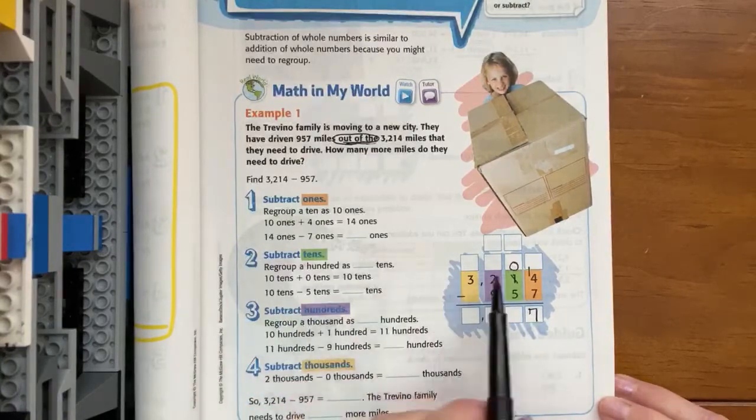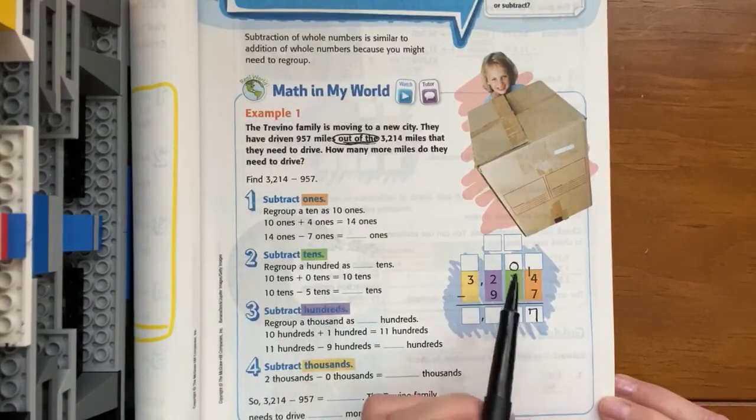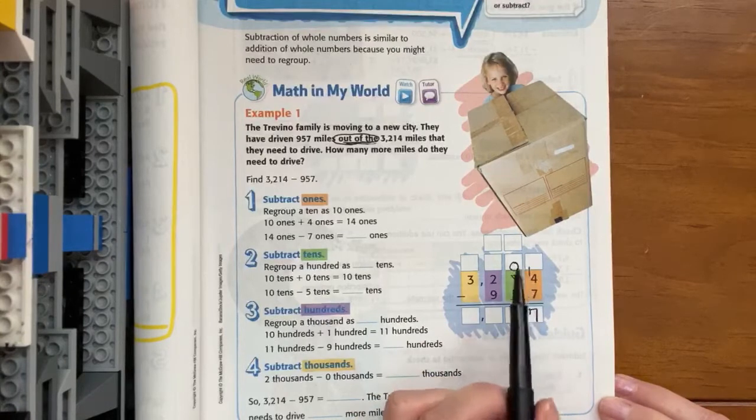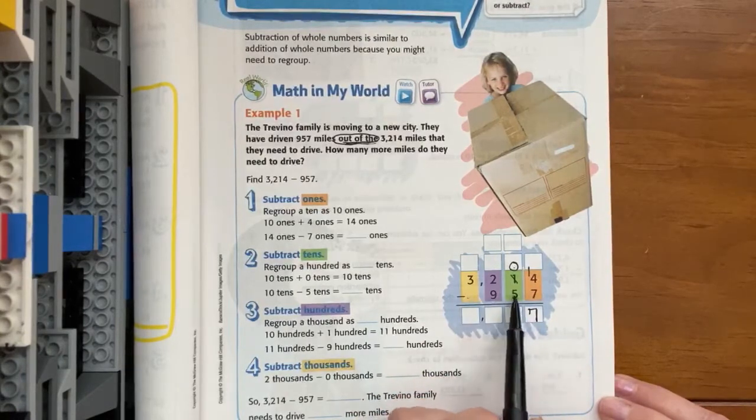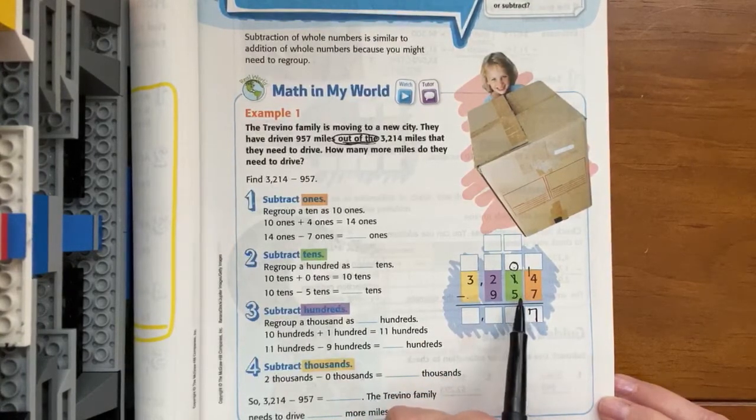So step two tells us that we now move to the tens. Well in the tens, let's read it. It says we have no tens and we have to take five away. Well that's impossible too.